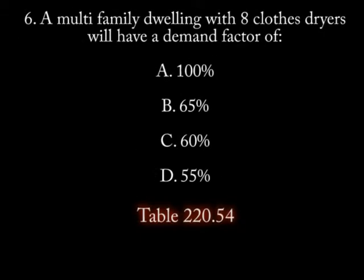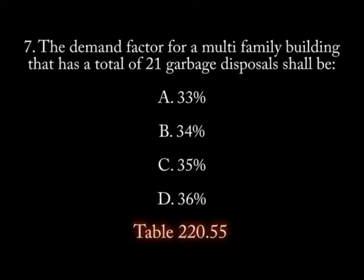Number 6. A multi-family dwelling with 8 clothes dryers will have a demand factor of: A. 100%, B. 65%, C. 60%, D. 55%.